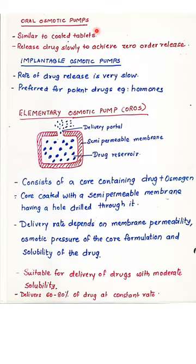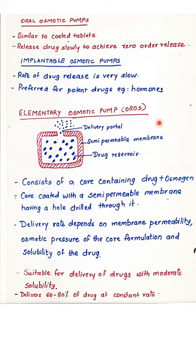Osmotic drug delivery devices are of two types: oral osmotic pumps, which are similar to coated tablets and can achieve zero-order drug release; and implantable osmotic pumps, where the rate of drug release is very slow and can extend over months, preferred for delivery of potent drugs such as hormones. Let us now look at some of the osmotic drug delivery systems commercially available. The first is the elementary osmotic pump, commercially available as OROS.